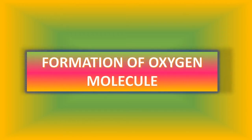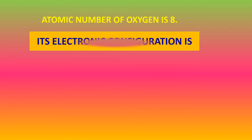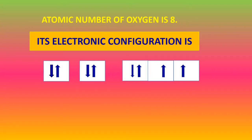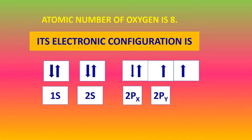Formation of Oxygen Molecule. The atomic number of oxygen is 8. Its electronic configuration is 1s2, 2s2, 2px2, 2py1, 2pz1.